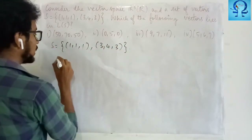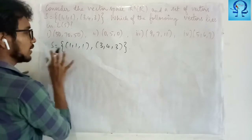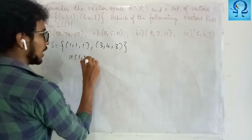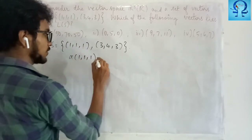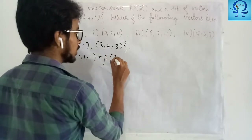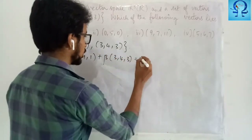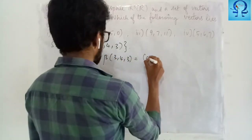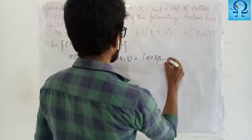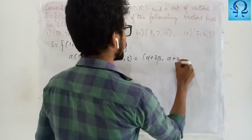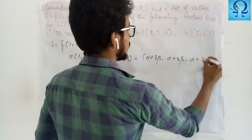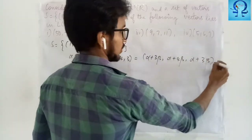Let me try to find out the elements in this span. That is going to be of the form alpha times of the first vector plus beta times of the second vector, and this is going to be: alpha plus 3 beta, alpha plus 4 beta, and alpha plus 3 beta.